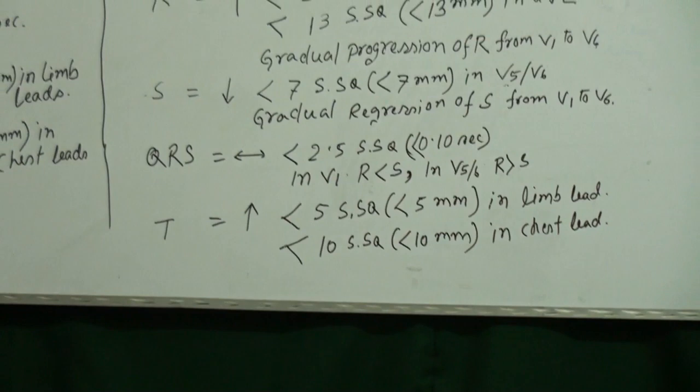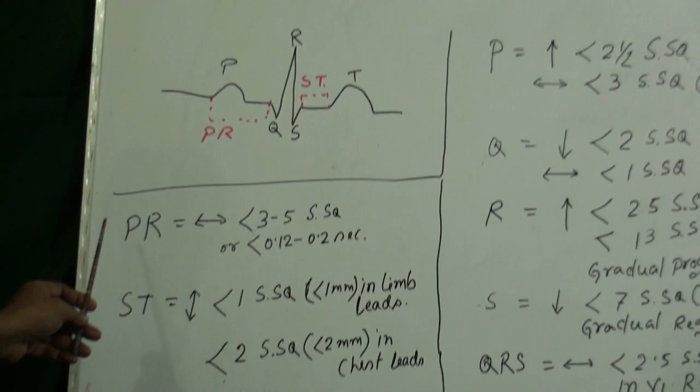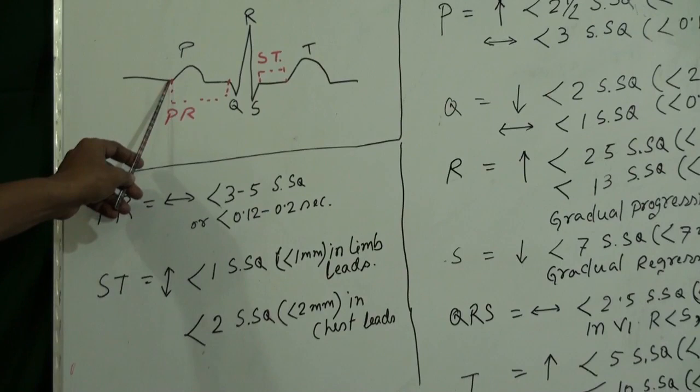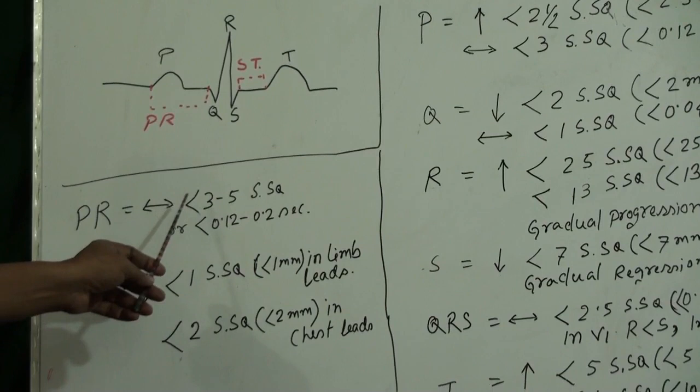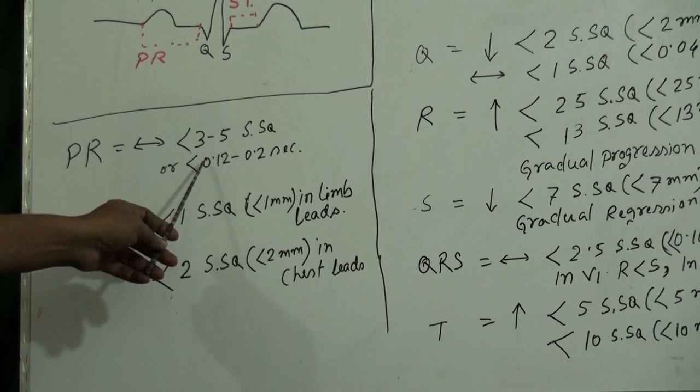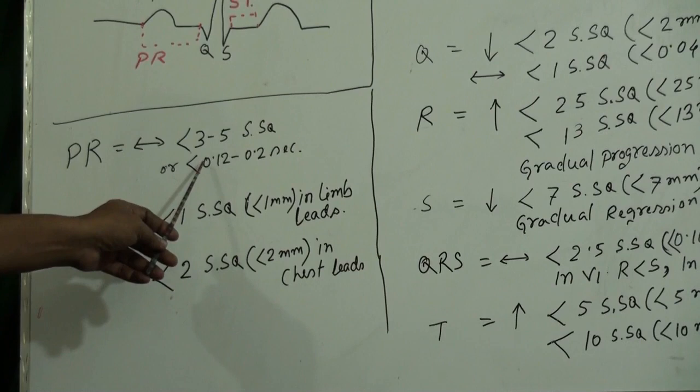Now I will discuss the PR interval and ST segment. The duration of the PR interval — from the onset of the P wave — is greater than 0.12 second. The PR segment is on the isoelectric line. The ST segment is on the isoelectric line; it may be elevated or may be depressed. The height or depth of the ST segment elevation or depression indicates ischemia.